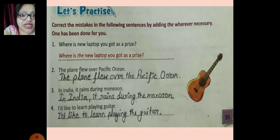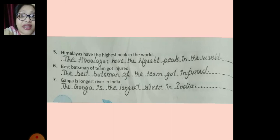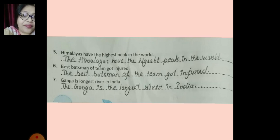'In India, it rains during the monsoon.' Next: 'I would like to learn playing the guitar.' Moving to the next set: 'The Himalayas have the highest peak in the world' — because it is specific and known to all. 'The best batsman of the team got injured.' 'The Ganga is the longest river in India.' We are not using 'the' before India, but we use 'the' before the Ganga and 'the longest river' because we are talking about a famous and specific thing.